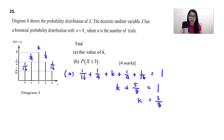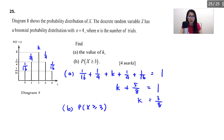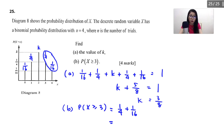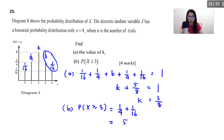For part B, find the probability of x ≥ 3. That means P(3) + P(4) = 1/4 + 1/16. Calculating: 1/4 + 1/16 = 5/16. So the answer is 5/16.